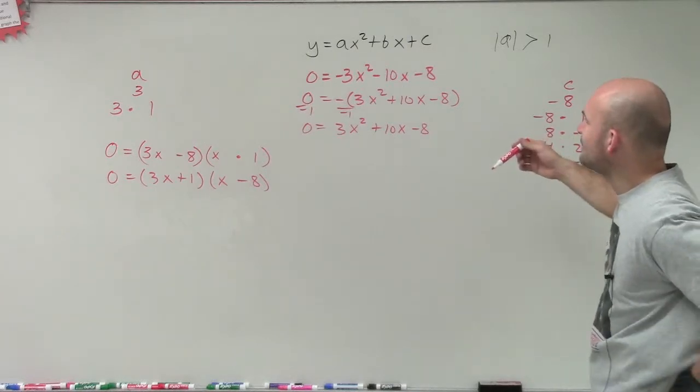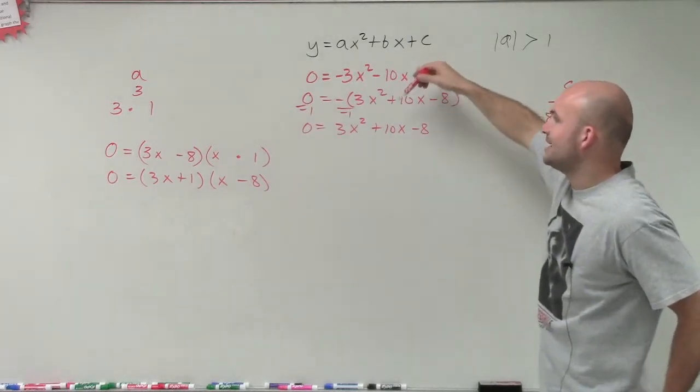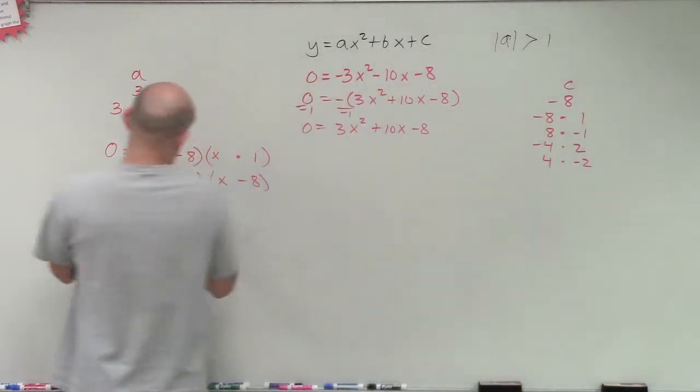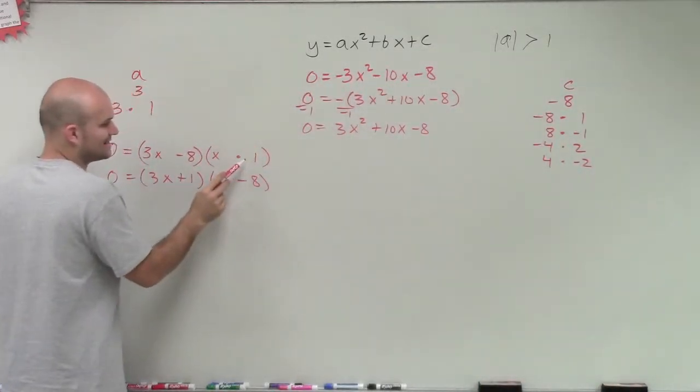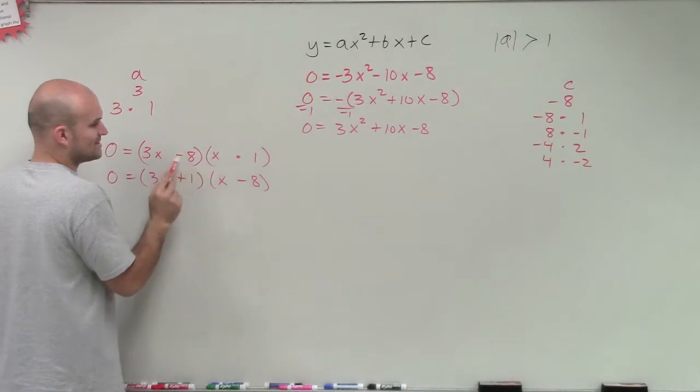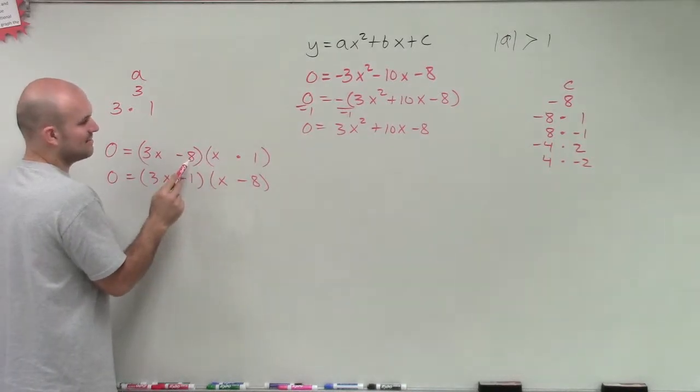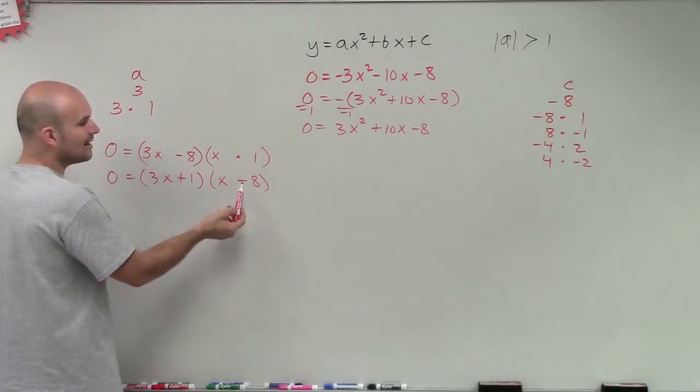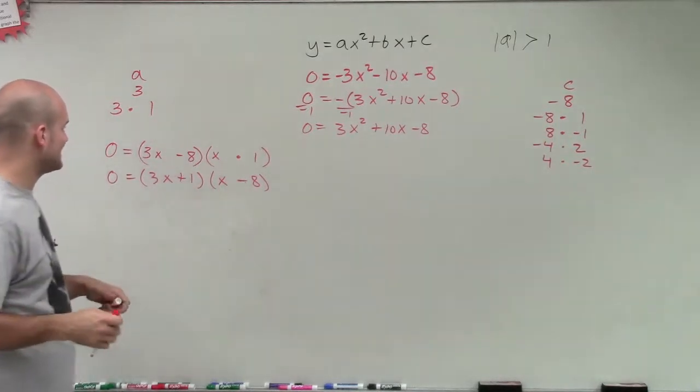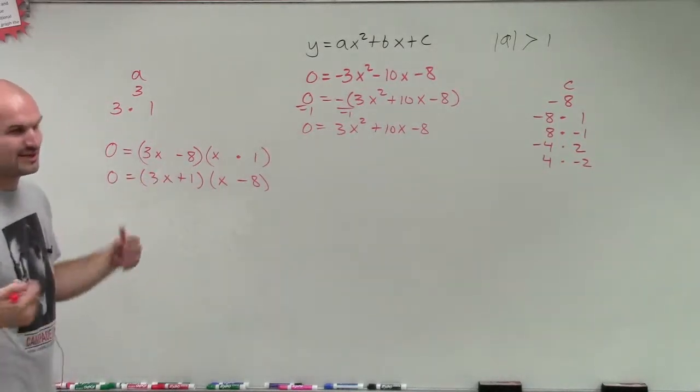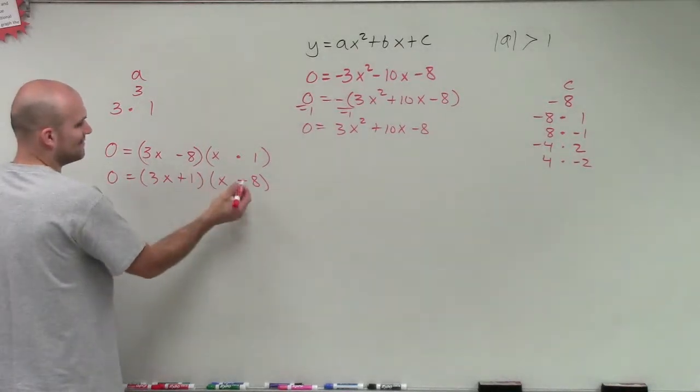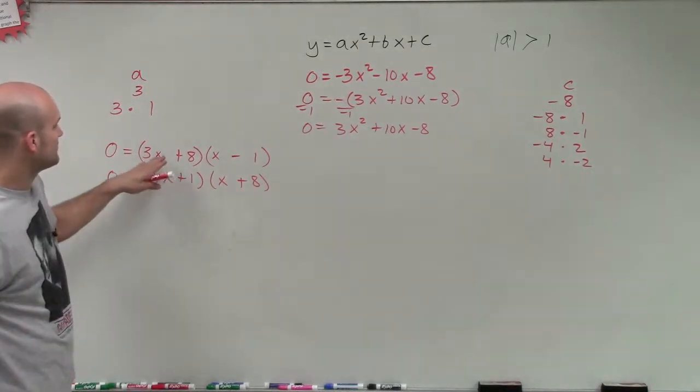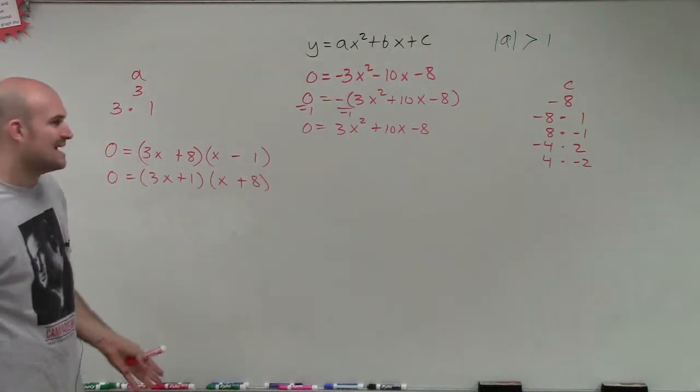So when trying to find my middle term of 10x, I need to be thinking about, all right, 3 times 1, that's going to give me a 3. And plus a negative 8, that's not going to give me a positive 10x. And the 3 times the 1, that's going to give me a negative 24 plus 1. That's not going to give me anywhere close. And even if I switch these around, made that a positive and made that a negative, I'm still not going to get anywhere to 10.